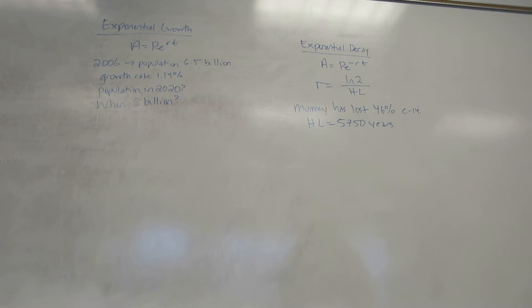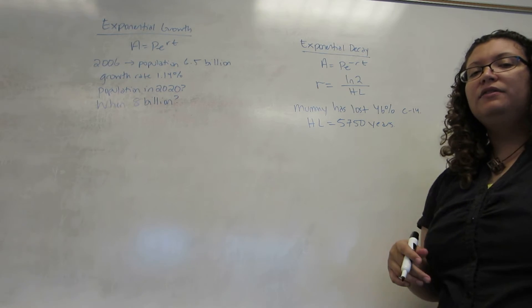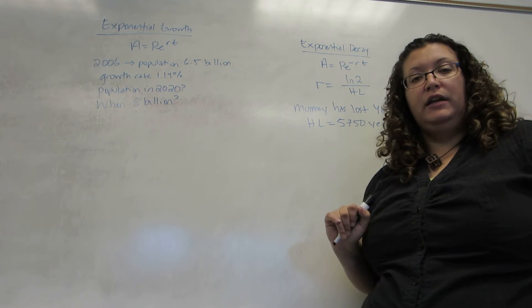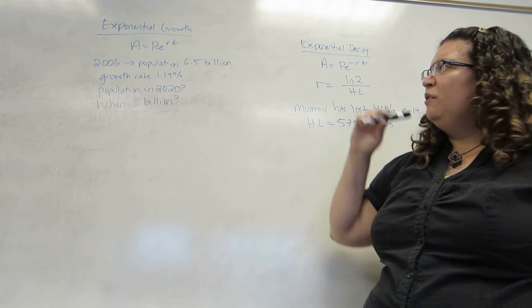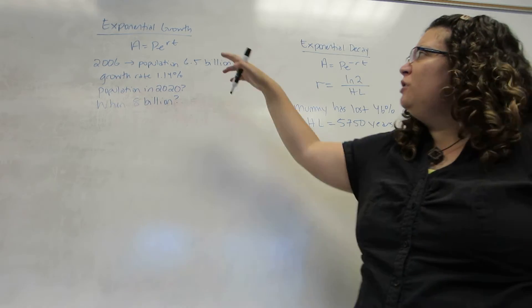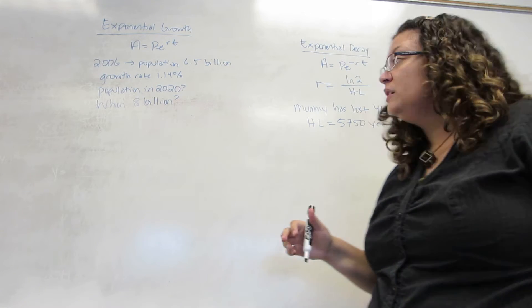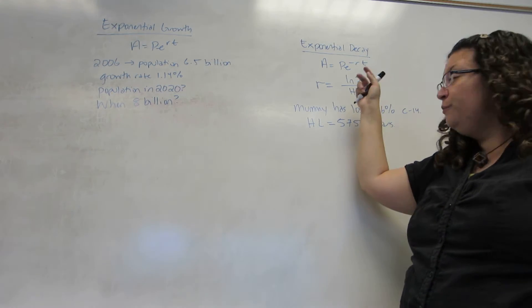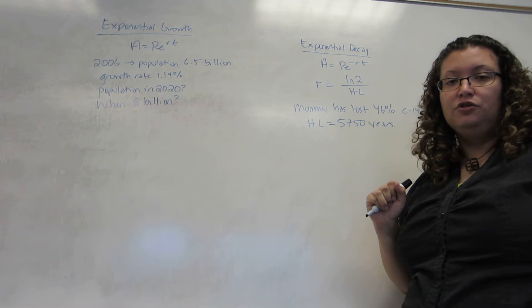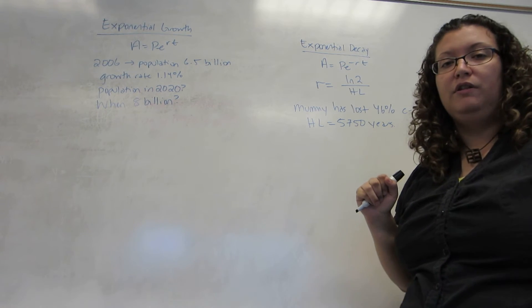Okay, we're going to do a second application of exponential and logarithmic equations, and these are exponential growth and decay. You notice they both have very familiar formulas. Exponential growth actually uses the same formula as continuously compounded interest, and exponential decay uses the same formula only with a negative interest rate, so we put a minus sign in front of the R.